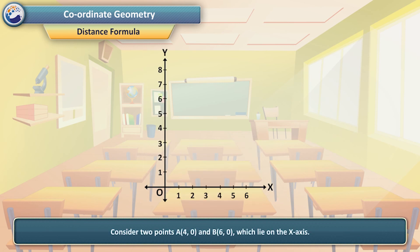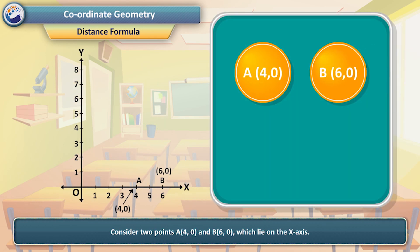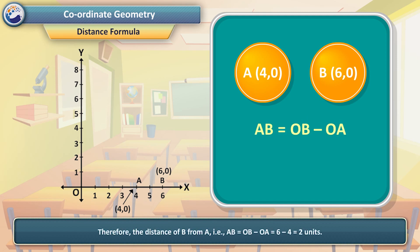Consider two points A(4, 0) and B(6, 0) which lie on the x-axis. Therefore, the distance of B from A, that is AB, is equal to OB minus OA, which is equal to 6 minus 4, which is equal to 2 units.